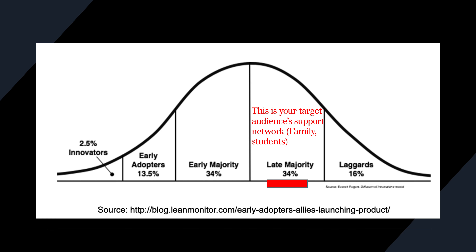Going into the late majority, I like to think of this as your target audience's support network — for example, family or even students. Let's say I have one person affected by a certain disease, and the innovation is to help treat that disease. It was able to reach the people who are afflicted by the disease, and then later on it is adopted by family members and students through internships, and so on.